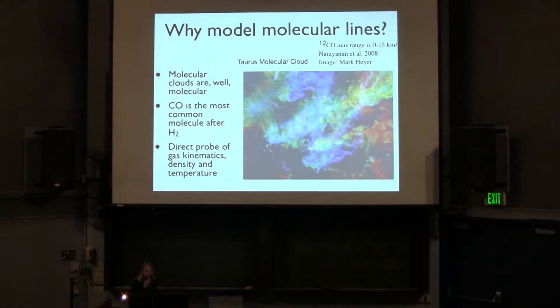Why model molecular lines? Well, first and foremost, molecular clouds are molecular, and so a lot of the gas is in these different molecules. Now, unfortunately, H2 is the most common one, but it doesn't have a dipole moment. And as we learned last week, its first transition is actually at around 500 Kelvin, so it's just not well excited in these cold clouds.